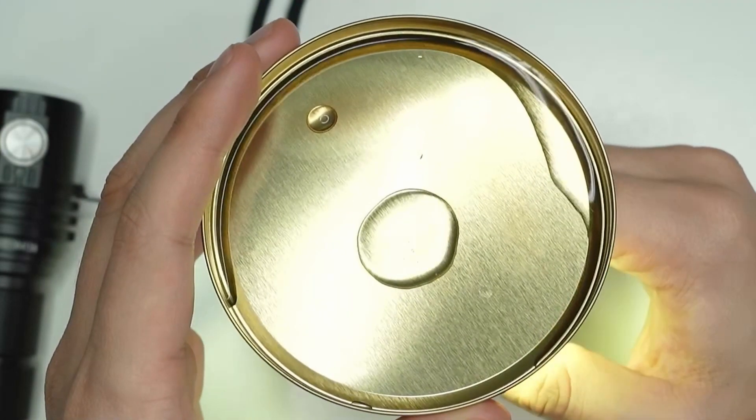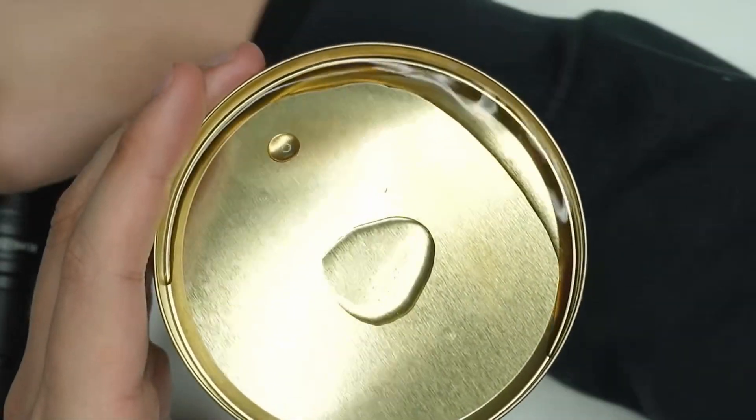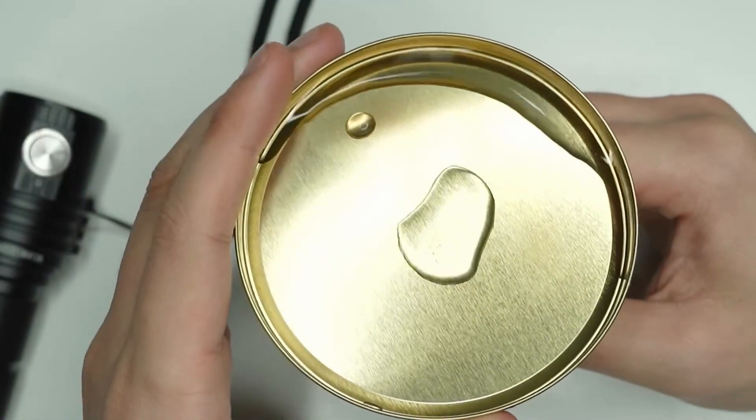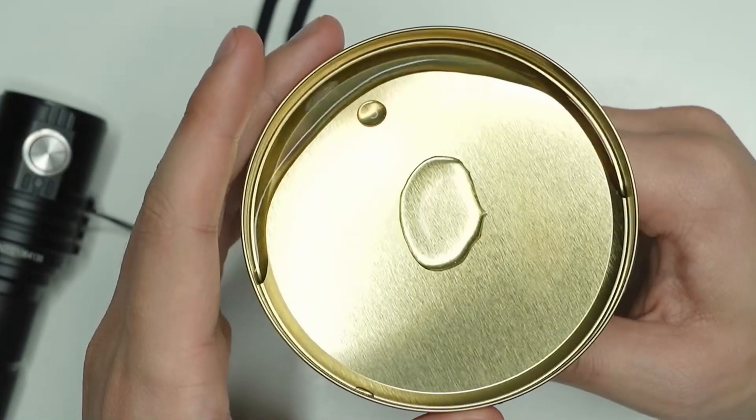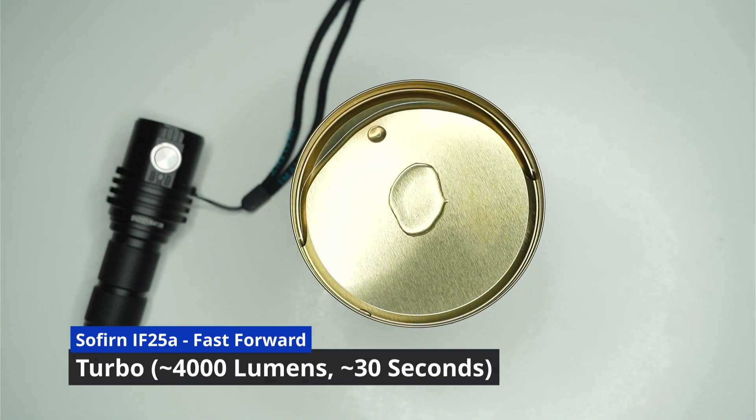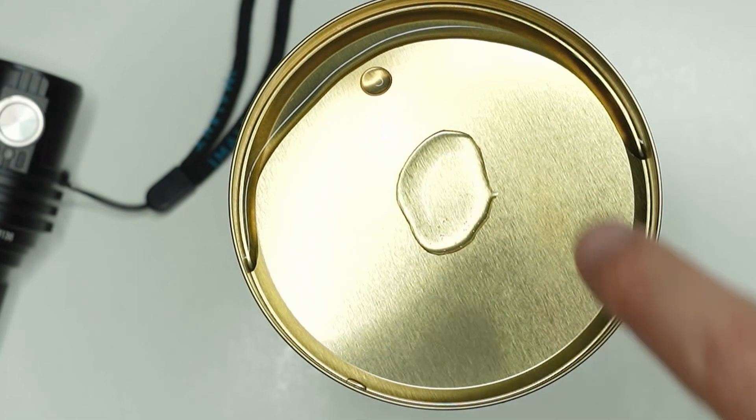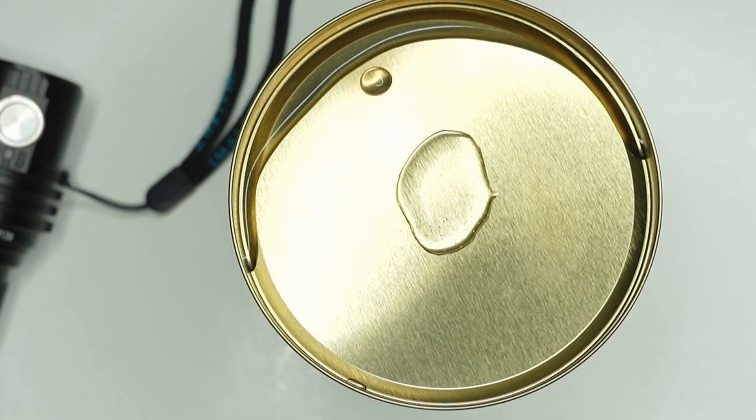Okay, let's take this one off and swap over. Now let's start pulling out some of the big torches there, the brighter torches anyway. So this here is the Sofirn IF25A, let's go and see if this does anything or not. A little bit of steam coming off the water, you can see it just on the sides of the tin.